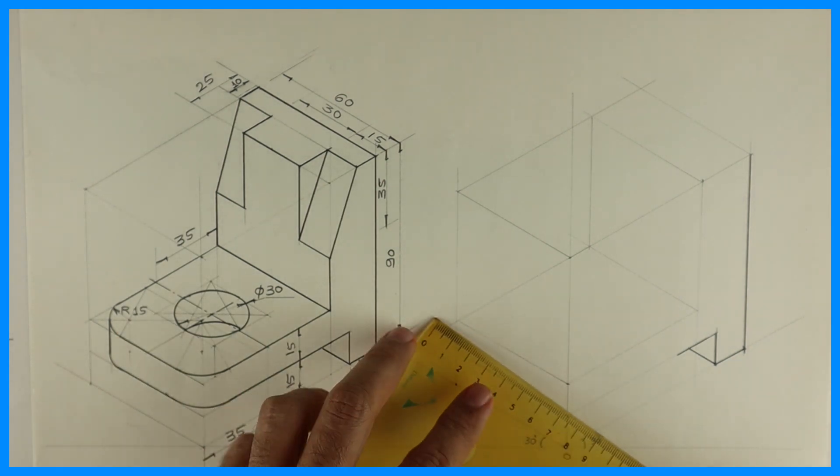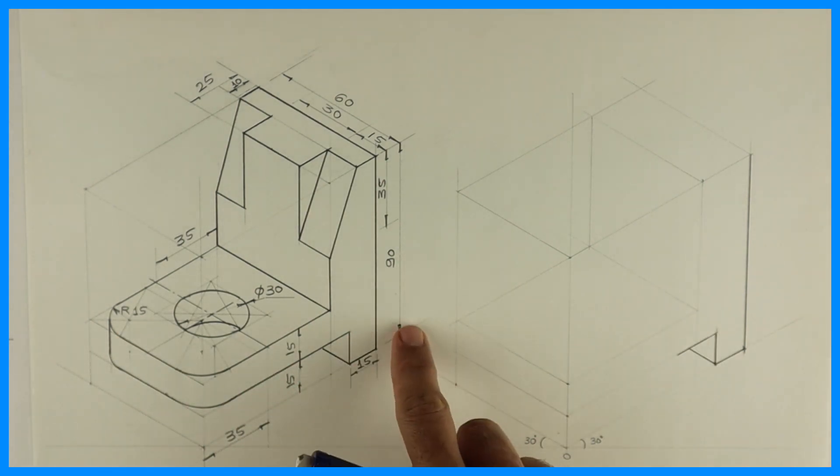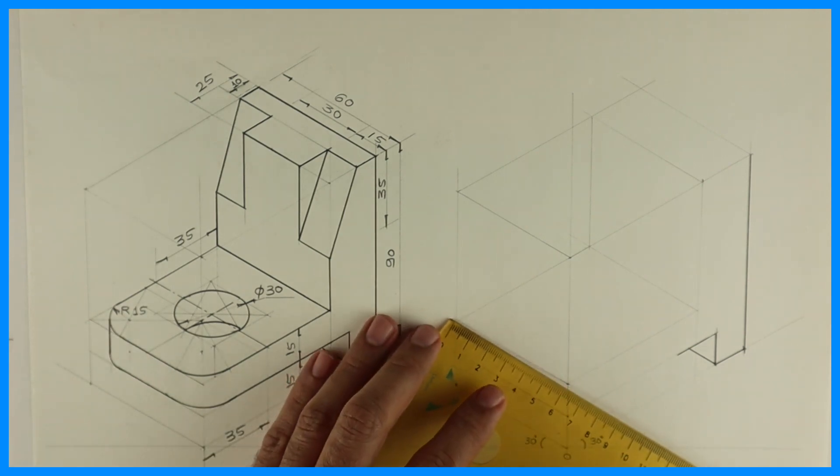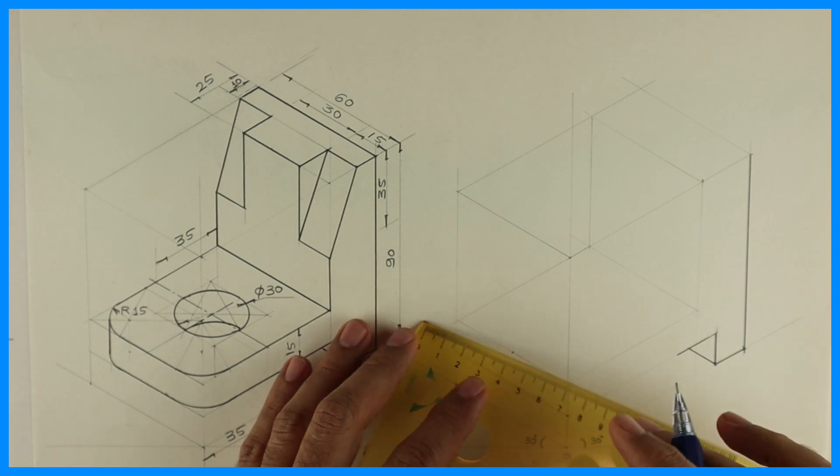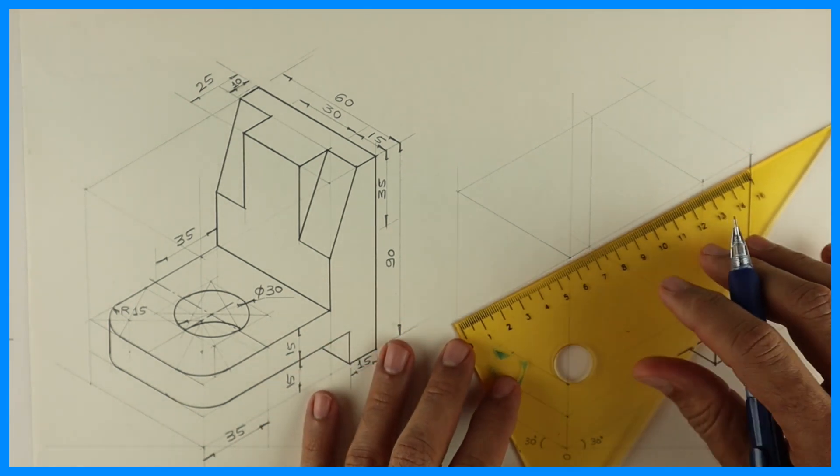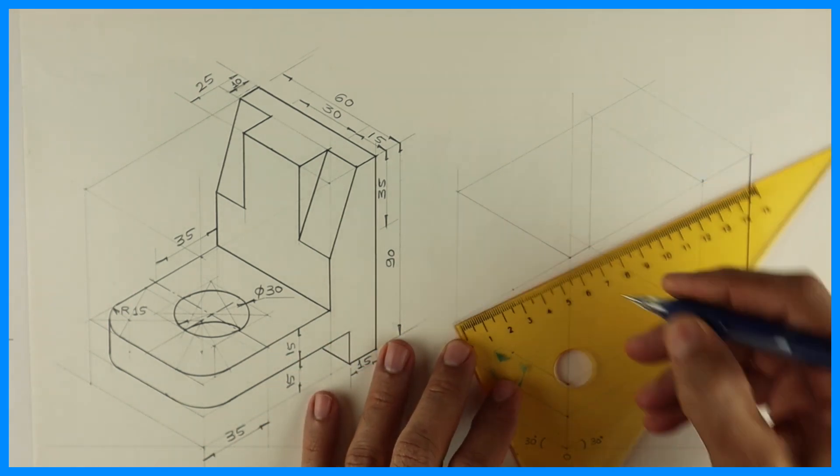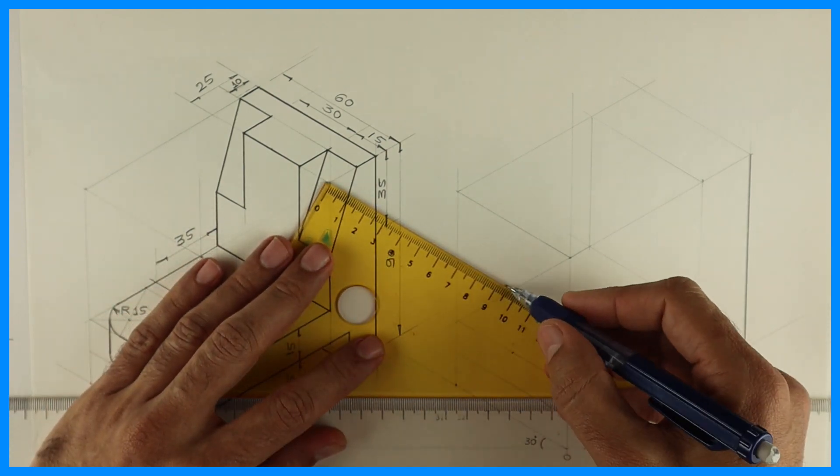Now see this. Radius 15. So we need to draw rhombus of 30. So we will take 30, 30 on both the sides. And we will draw rhombus.